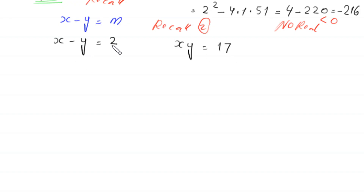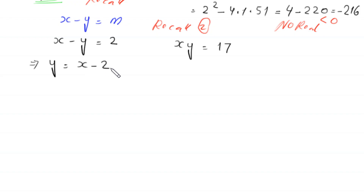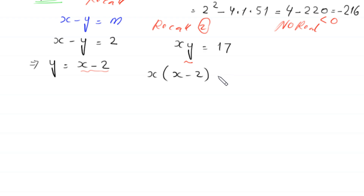From x − y = 2, we get y = x − 2. Substituting into xy = 17 gives x(x − 2) = 17.